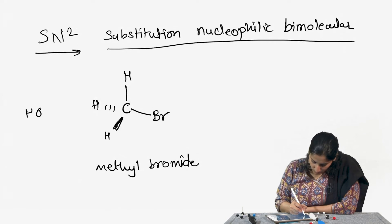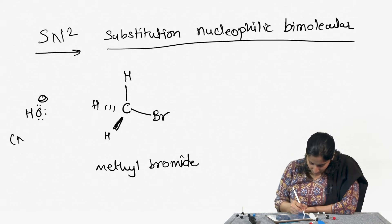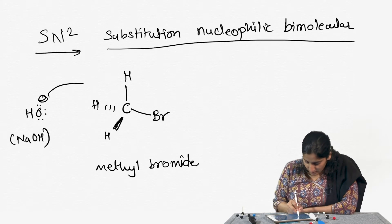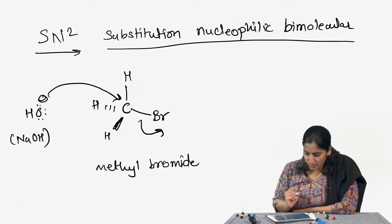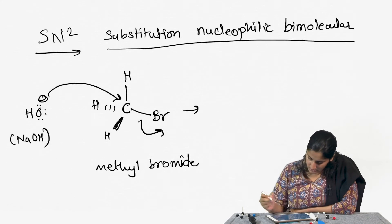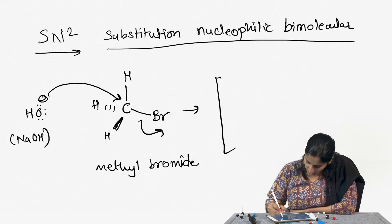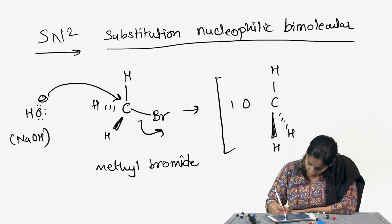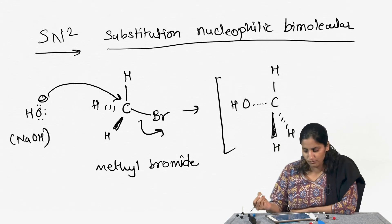In this reaction, the hydroxide from NaOH is going to attack the carbon and kick the bromine out. What it goes through is a transition state such that the bond between the hydroxide and carbon is starting to form.